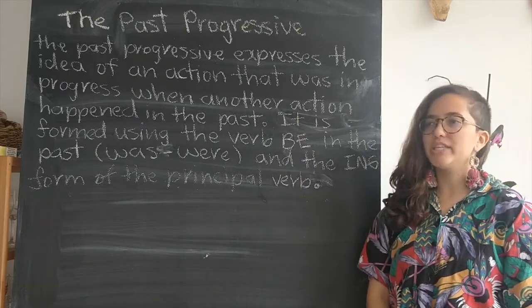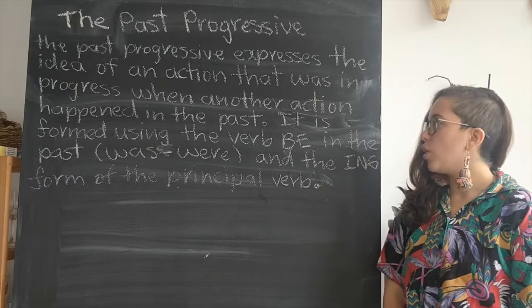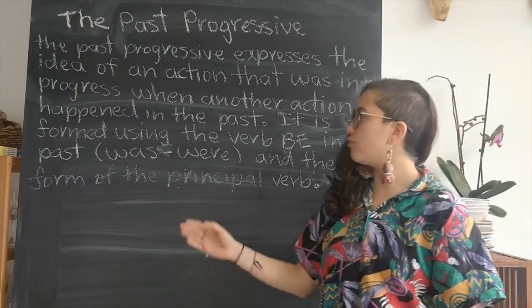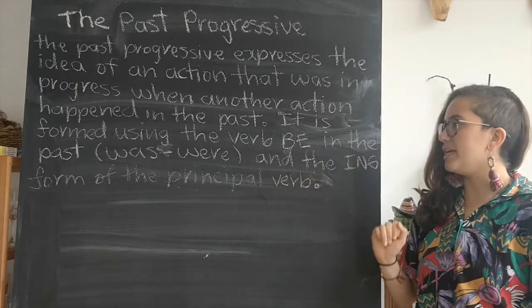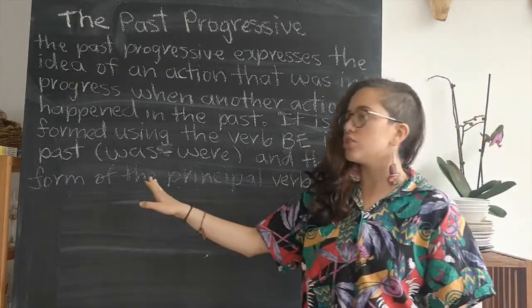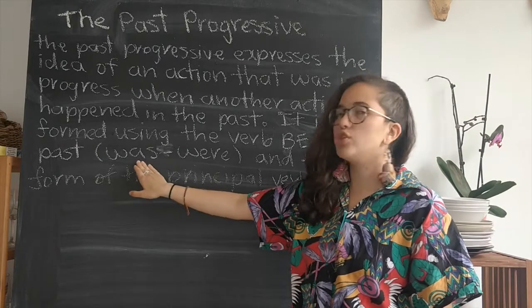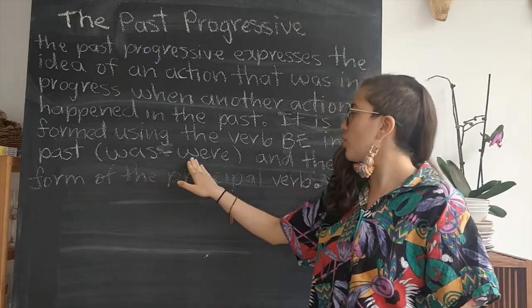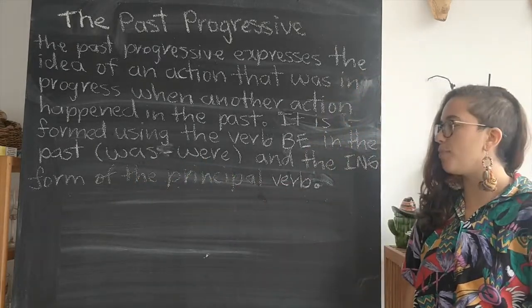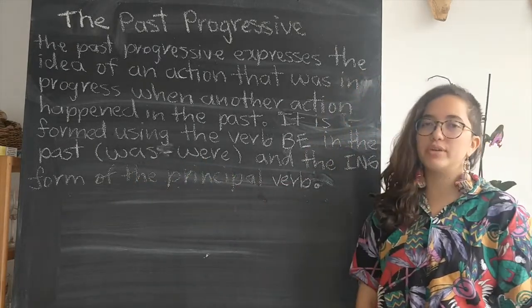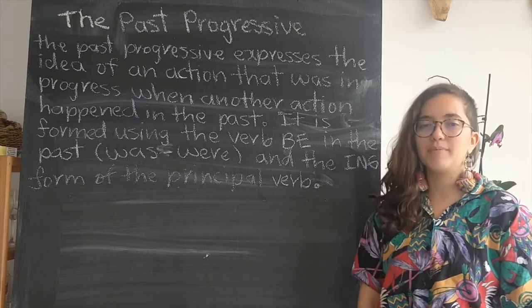To use the past progressive, we have to form it using the verb 'be' in the past, so that means using 'was' or 'were' and the -ing form of the principal verb.